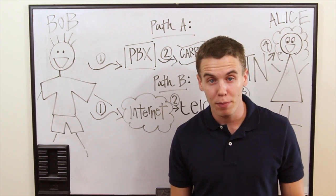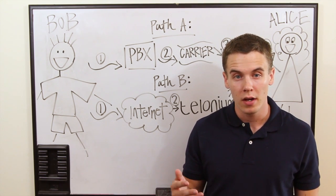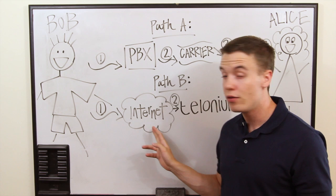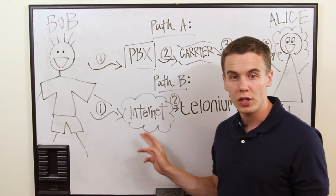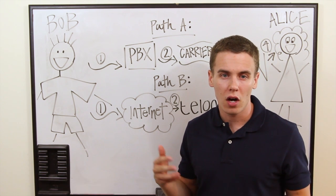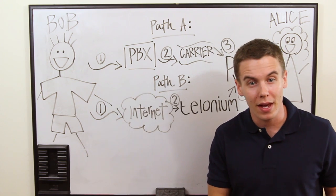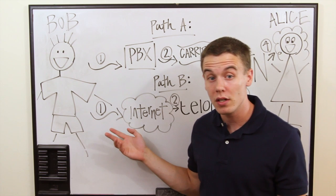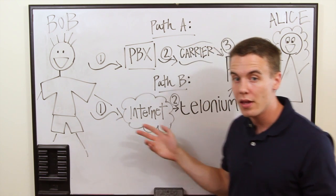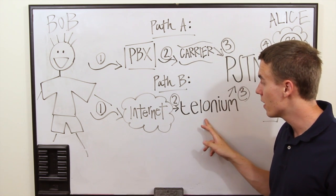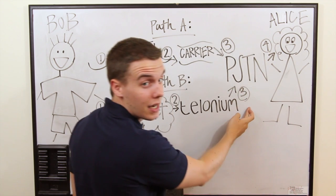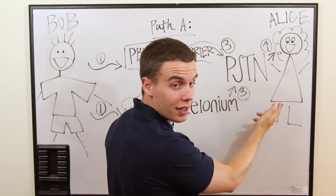In the second picture, Bob makes his call using VoIP. First, Bob's call is sent through to the internet, which is analogous to the call being sent through PBX in the first picture. That's why we call this a hosted PBX, because the PBX is hosted on the internet. Through the internet, the call is sent to us, Telonium, and then sent to the PSTN, and then finally connected to Alice.